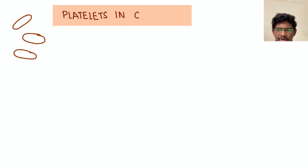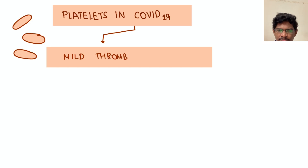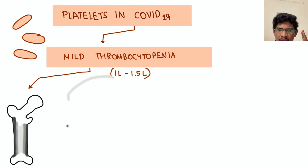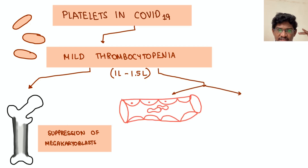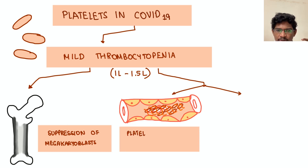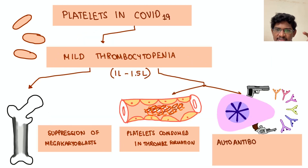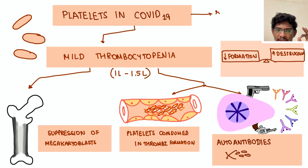Platelets in COVID: there will usually be mild thrombocytopenia. First, bone marrow suppression — megakaryoblasts are suppressed and production is decreased. Next, in COVID there will be lots of thrombi forming here and there, consuming platelets. Also, the antibodies formed in COVID not only attack the S protein of coronavirus — they also attack a minor subset of platelets, contributing to COVID-induced immune thrombocytopenic purpura, ITP. It's very rare, but it is a complication. Rarely, thrombocytosis can also happen.